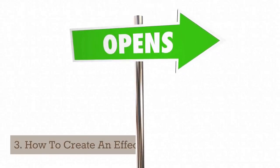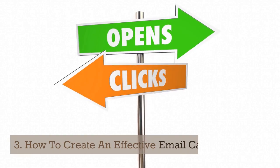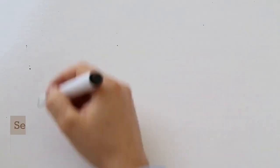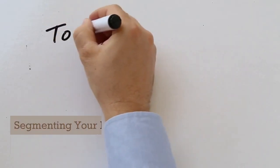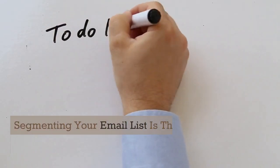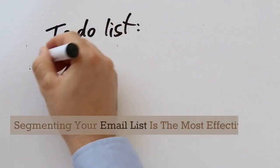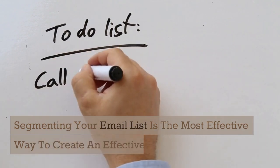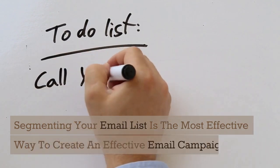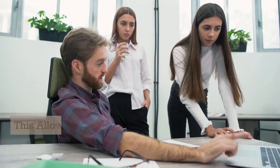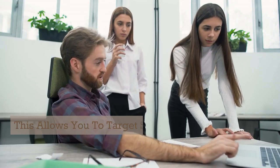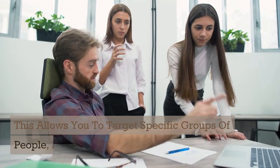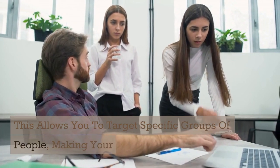How to create an effective email campaign? Segmenting your email list is the most effective way to create an effective email campaign. This allows you to target specific groups of people, making your campaign more successful.